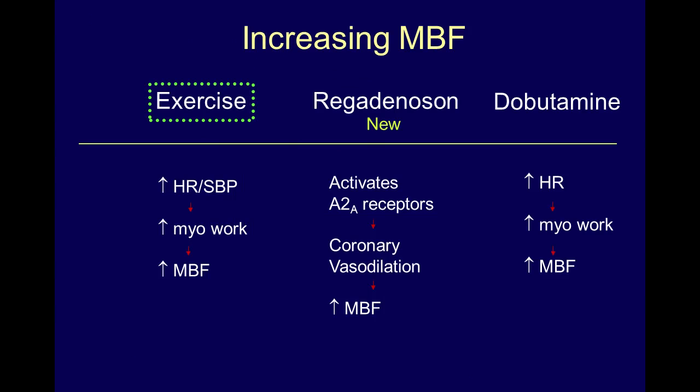The kinds of ways we can alter blood flow: we can treadmill people, or we can give vasodilators — what these drugs do is just dilate coronary arteries and try to create heterogeneity of blood flow. We rarely do dobutamine anymore. We used to do more in people who couldn't exercise and couldn't get a vasodilator. With the older vasodilators, we didn't give them to people with bad reactive airway disease. Now regadenoson is pretty safe to give people.